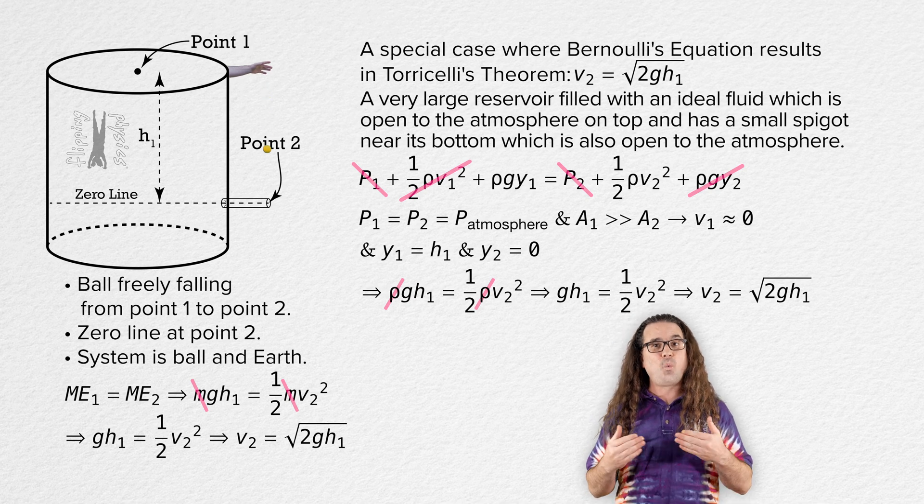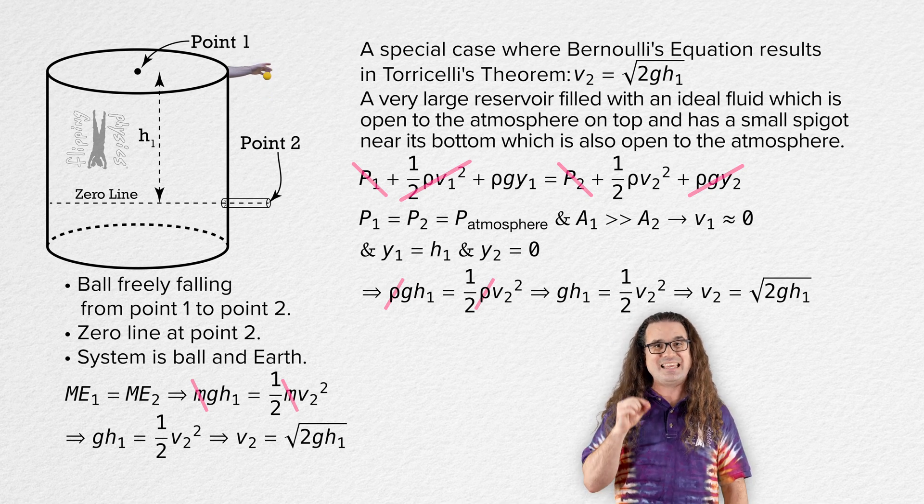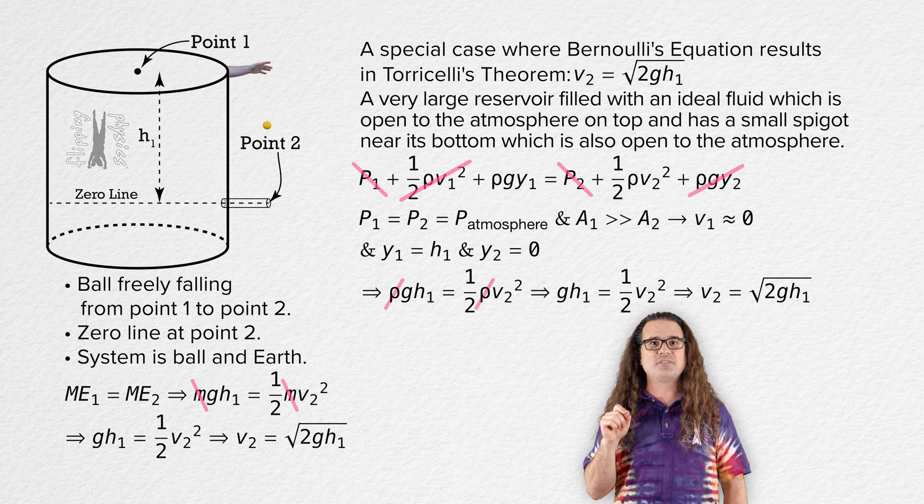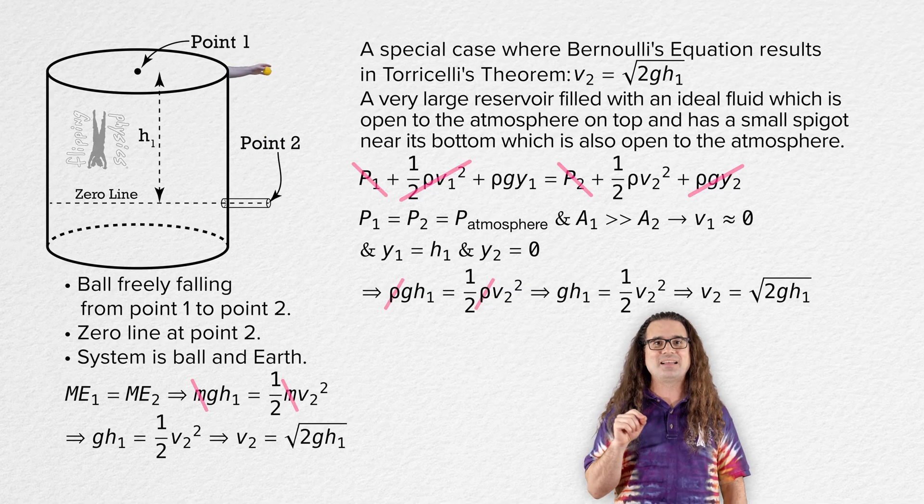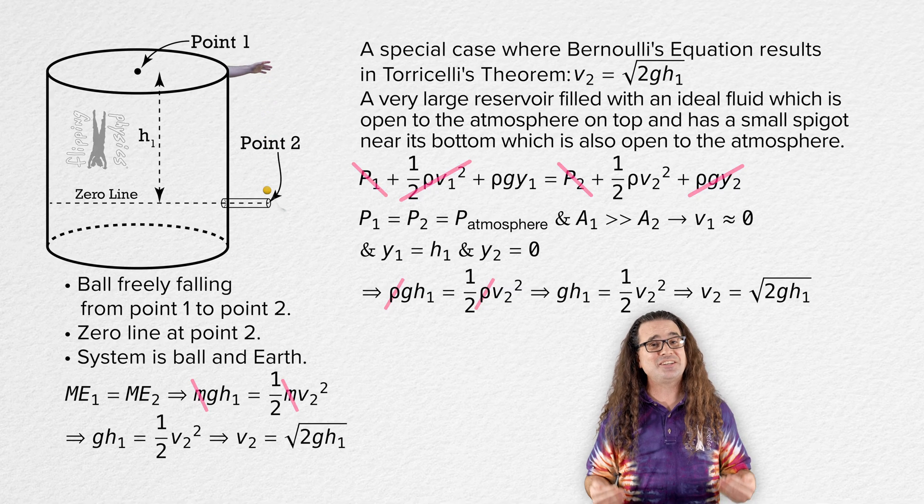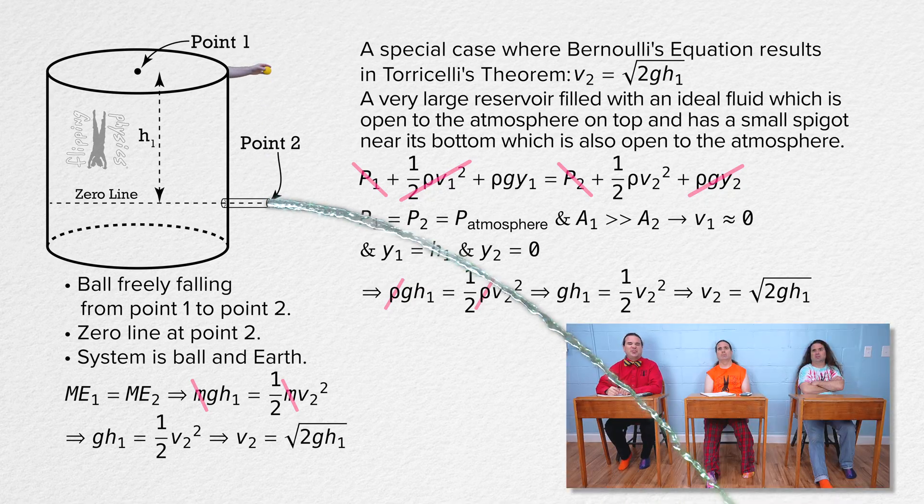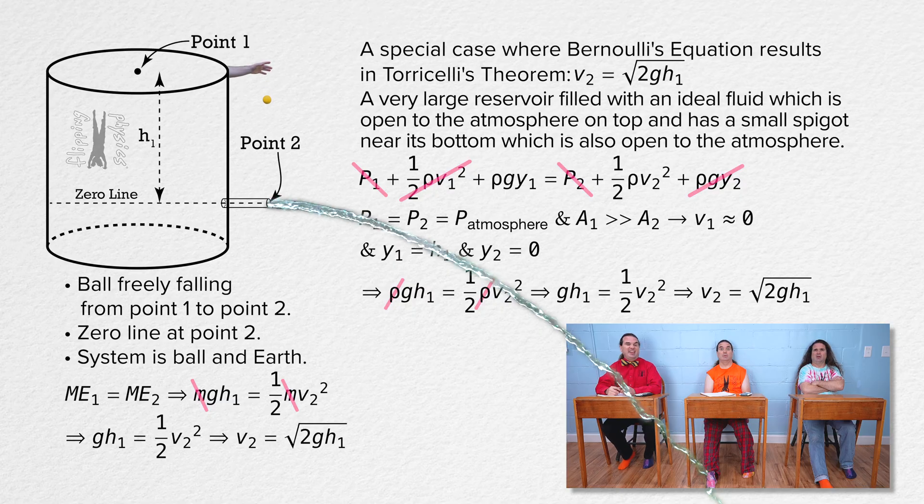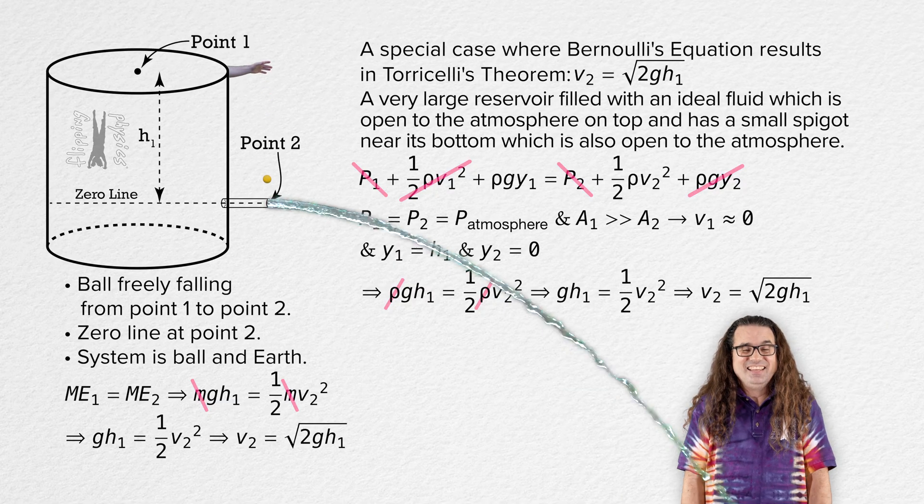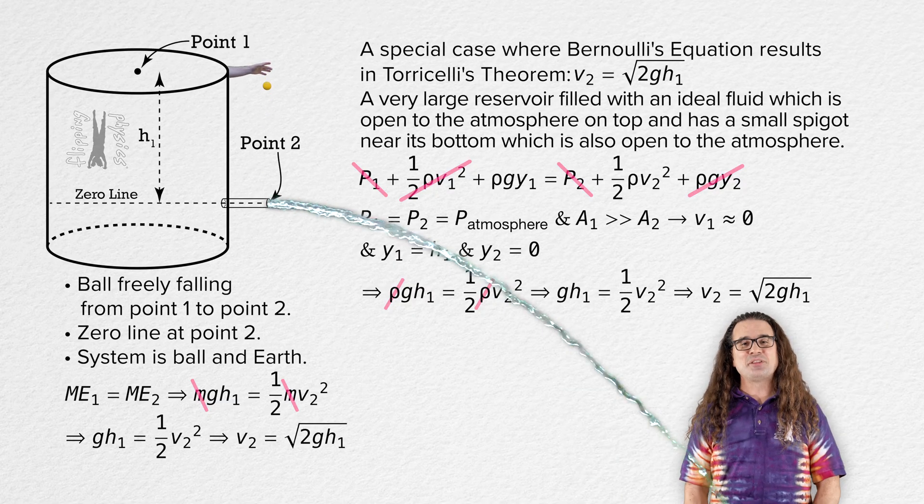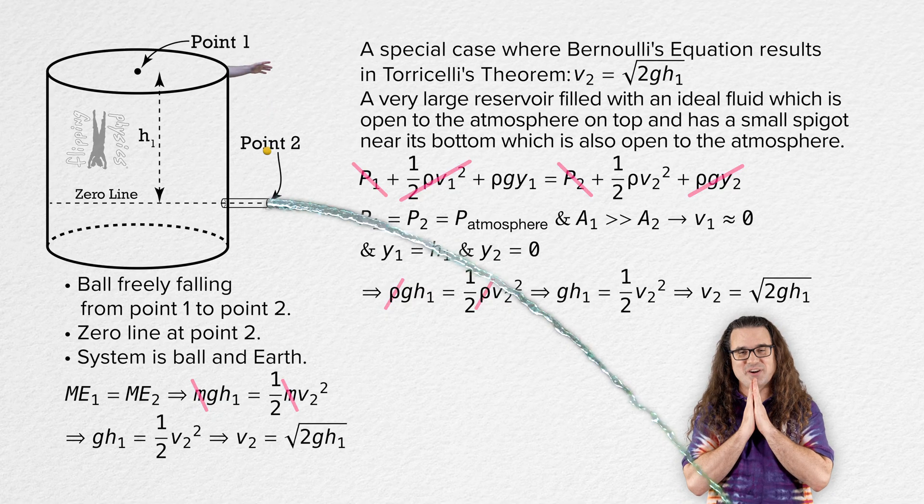It turns out that when the change in vertical heights is the same, the speed of the dropped ball is the same as the speed of the fluid flowing out of the spigot. Imagine discovering that roughly 400 years ago. Thank you very much for learning with me today. I enjoy learning with you.